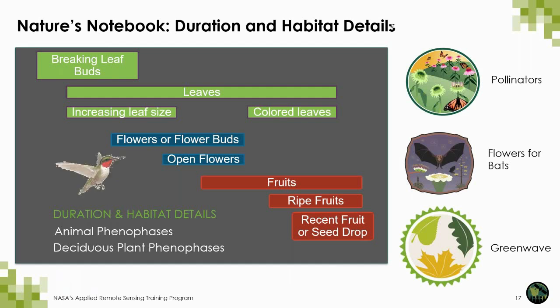This is an example of what you can track on Nature's Notebook, like the phenophases from a deciduous plant, where many of these phases are overlapping — such as flowers or flower buds at the same time as fruit. There are also many regional campaigns focused on a particular species or ecosystem dynamic, such as changes in food sources for pollinators like monarch butterflies, cactus flowering events for bat food, and green wave identification. During session three we are going to discuss the green wave example in more detail.